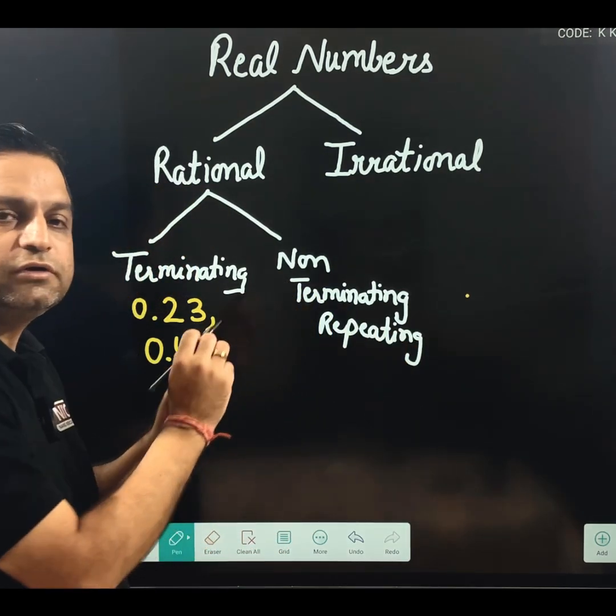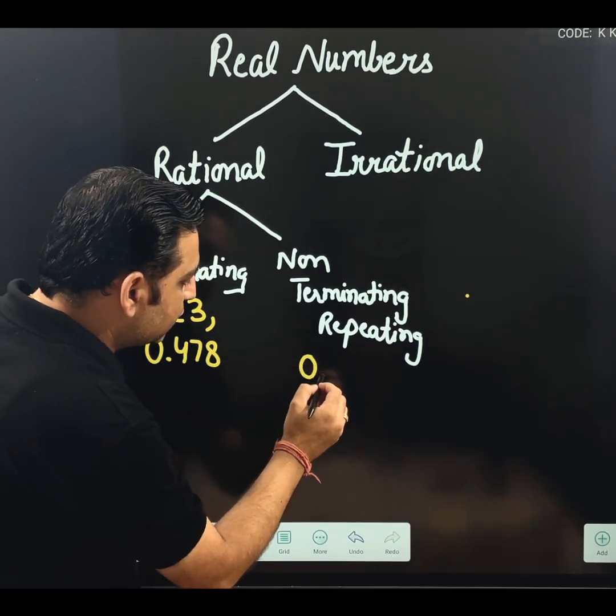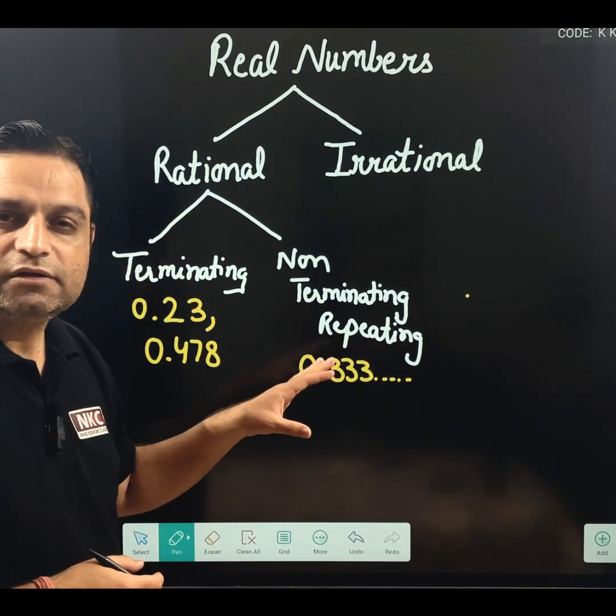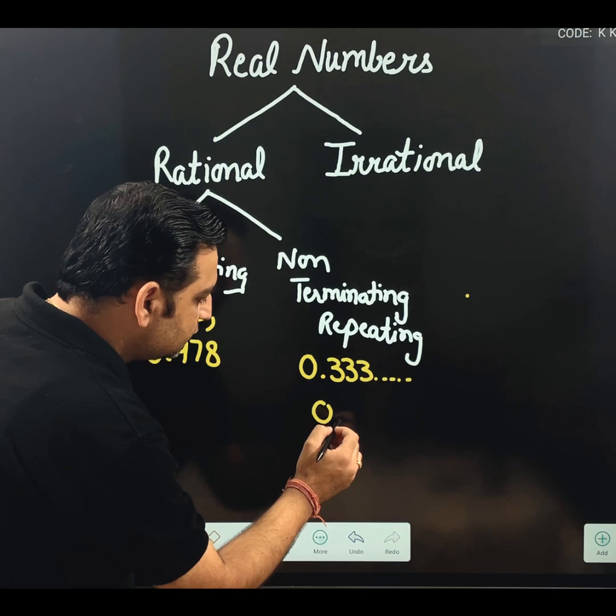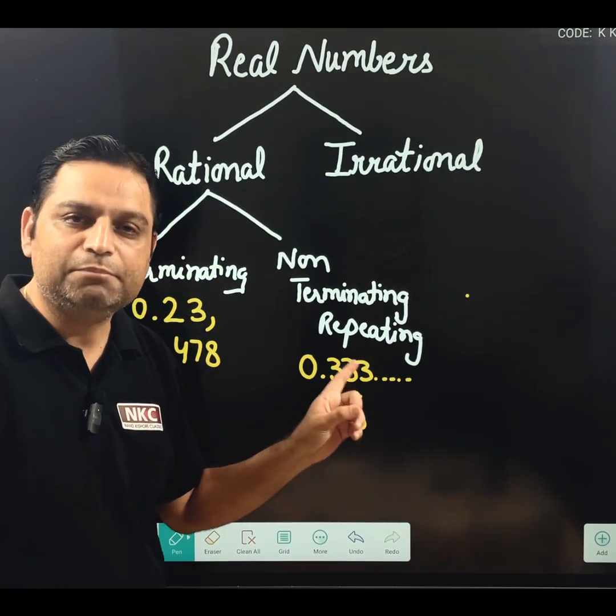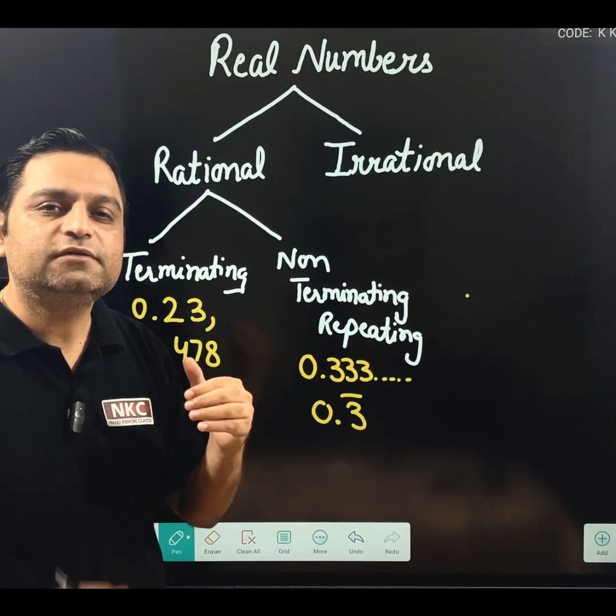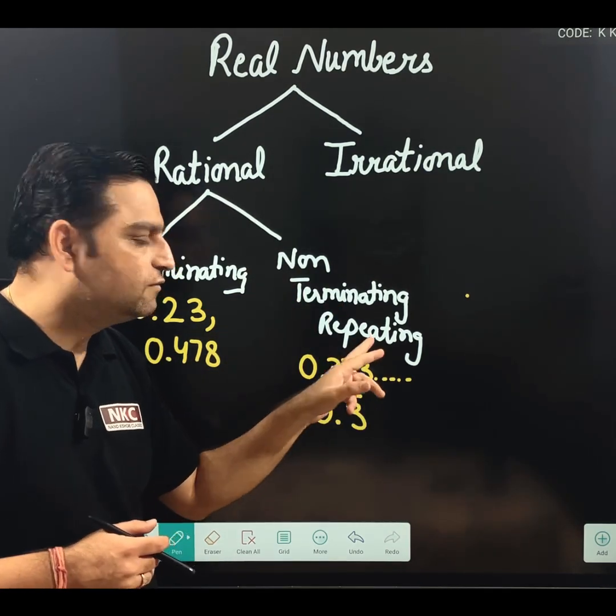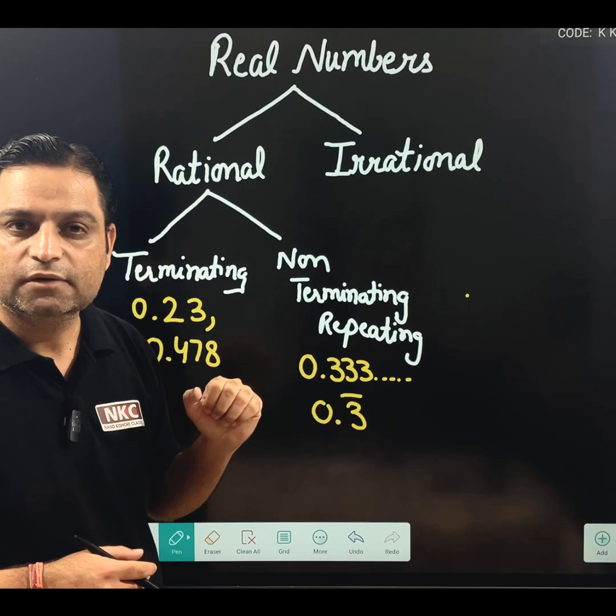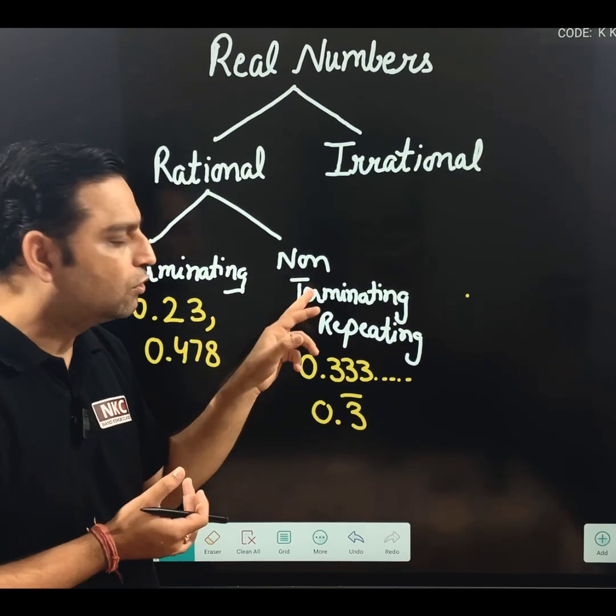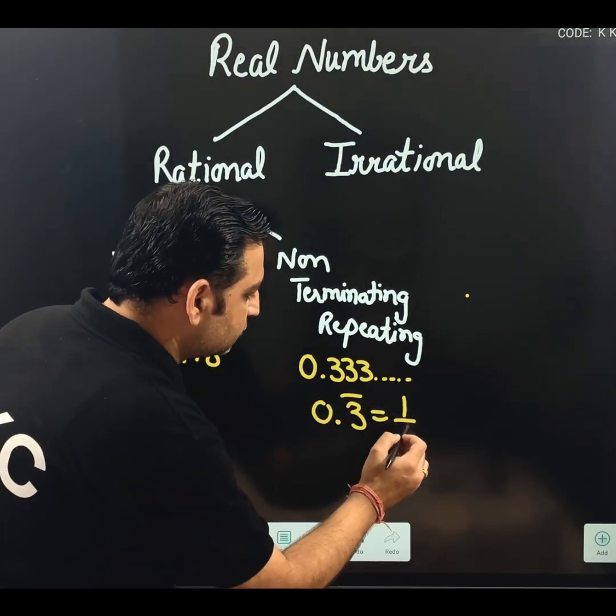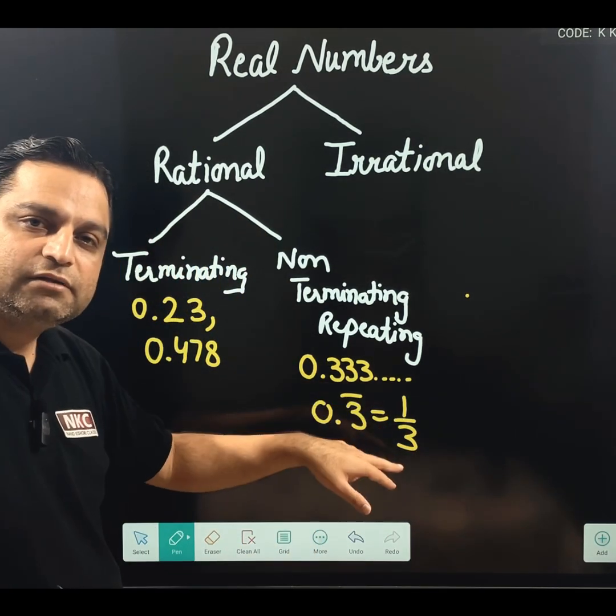Now, what is the meaning of non-terminating repeating? That is, like, you have a number 0.333 dot dot dot. 0.3333 can also be written as 0.3 bar. That means, when repetition of a number is there after decimal. Since repetition is there, that is why repeating word is used. It is never ending, that is why non-terminating is used. So, collectively, it is non-terminating repeating. And, 0.3 bar is actually 1 over 3.